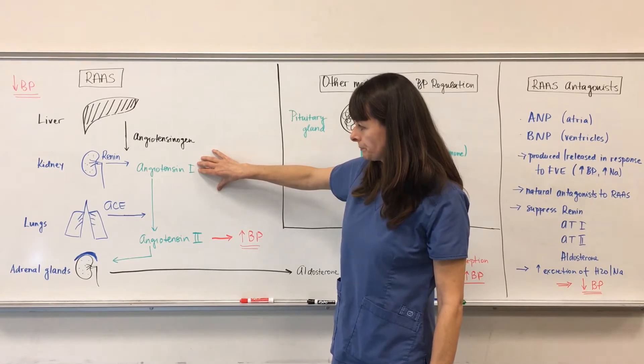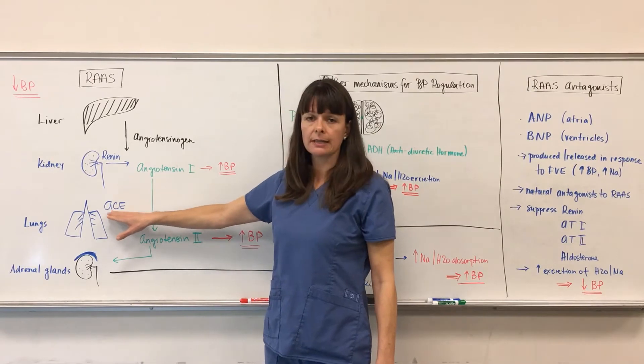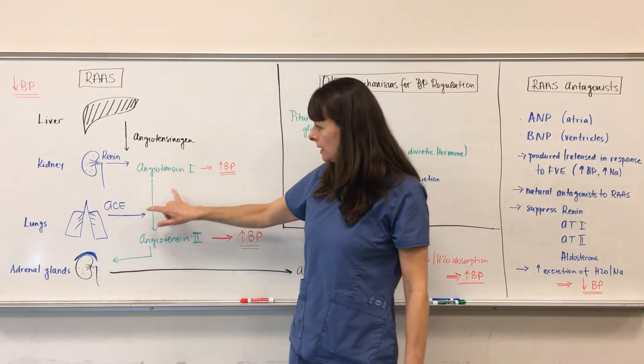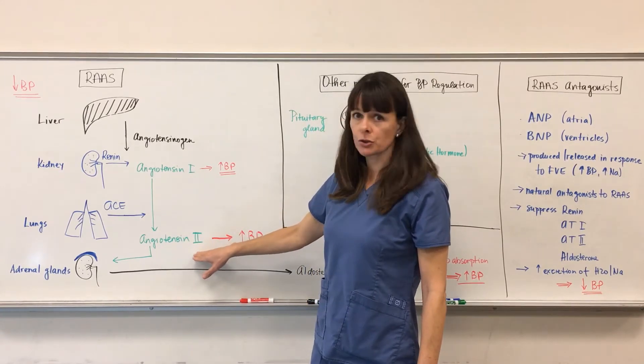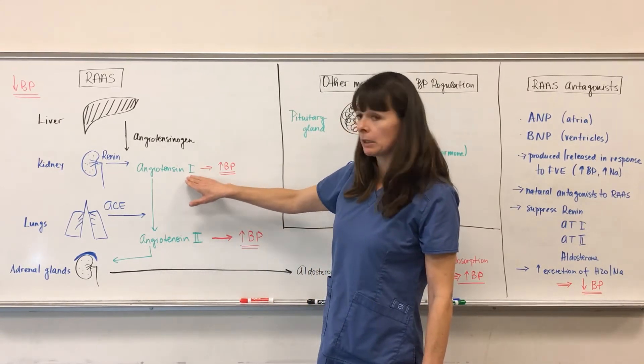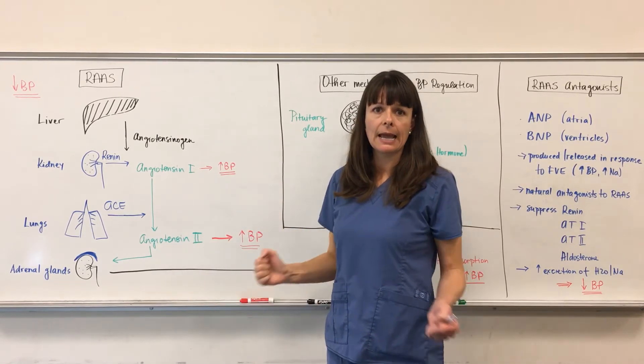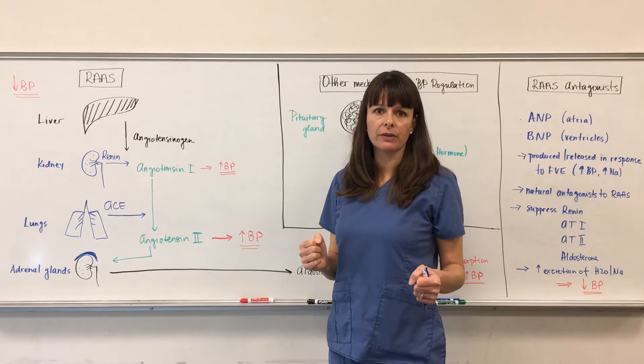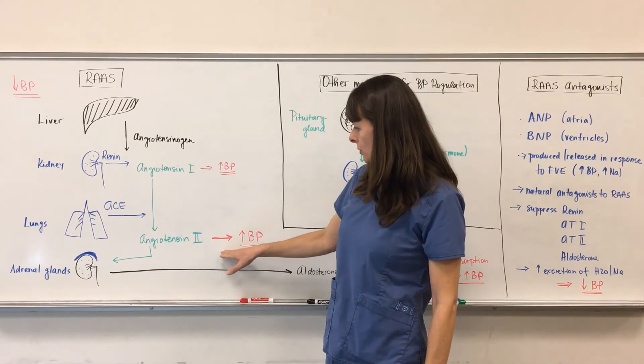angiotensinogen then will cause the lungs to release ACE, angiotensin converting enzyme. These two will combine and form angiotensin 2. So think about angiotensin 1 being potent, angiotensin 2 being more potent. Again, angiotensin makes the blood vessels tense, causing vasoconstriction and therefore an increase in blood pressure.